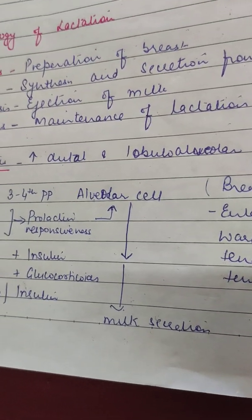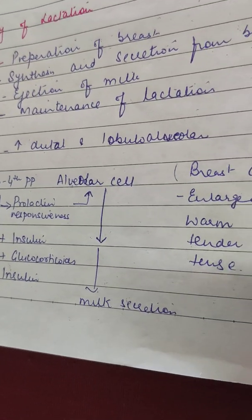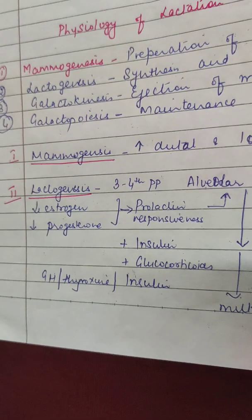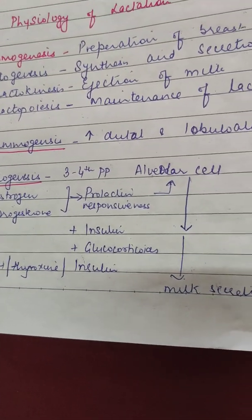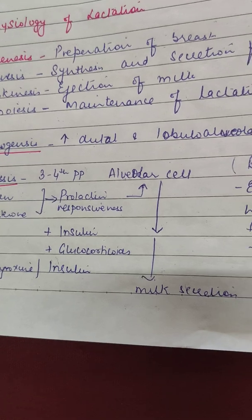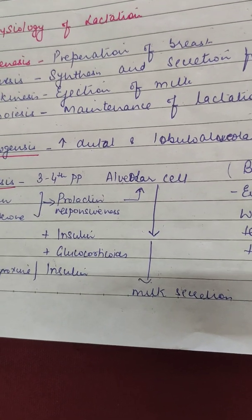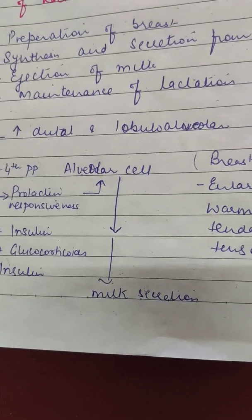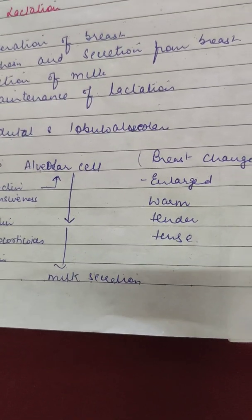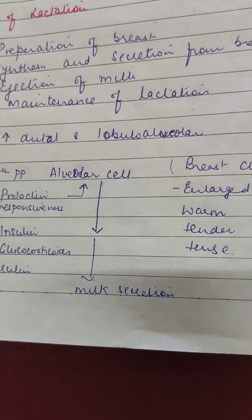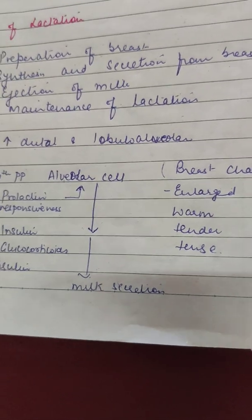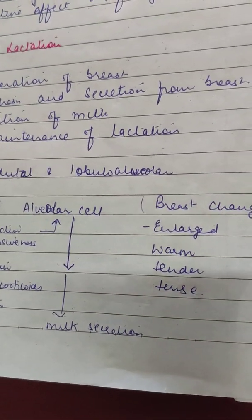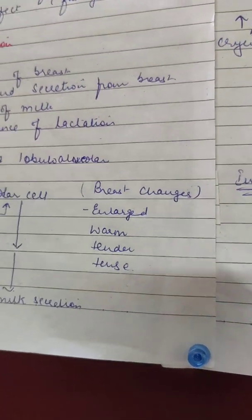Along with that, hormones like insulin, glucocorticoids, thyroxin and growth hormone are all responsible for the responsiveness of alveolar cells to prolactin. Prolactin is the milk-secreting hormone, so there is secretion of milk from the epithelial lining of the alveoli of the breast. When the breast starts producing milk, changes occur such as a fullness feeling in the breast.